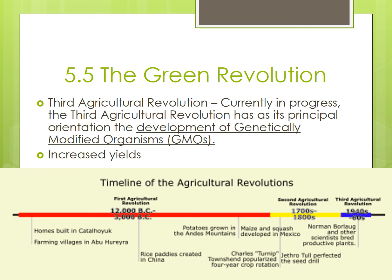That was accomplished through three things: the development of high-yield seeds, the increase of chemical fertilizers and pesticides, and increased irrigation projects and mechanization of agriculture.